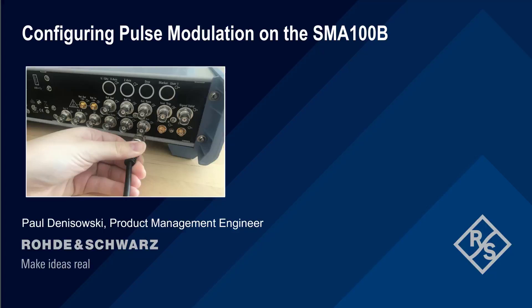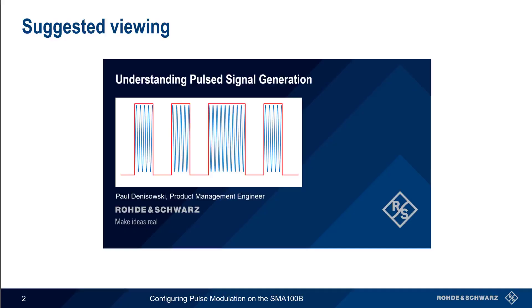Hello, and welcome to this presentation, Configuring Pulse Modulation on the SMA-100B. In this short presentation, we will explain how to use the Rohde & Schwarz SMA-100B analog signal generator to create pulsed RF signals. This presentation assumes a basic understanding of signal generators and pulse modulation.